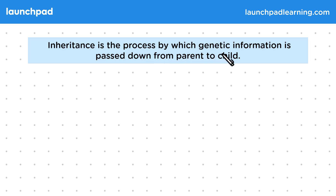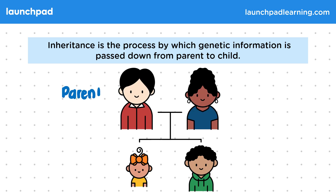Inheritance is the process by which genetic information is passed down from parent to child. In this diagram you can see the parents at the top and the children below. Remember that the gametes that make you — the sperm and egg cells — contain chromosomes from each parent, so you have characteristics from each parent. Genetic inheritance controls the characteristics of all living things.